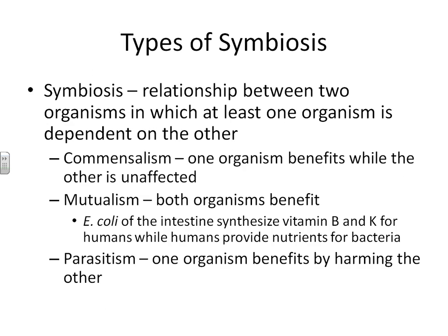Antagonistic relationships are not the only types of relationships we see between the host and microbes. There are three types of symbiotic relationships: commensal relationships, in which one organism benefits while the other is unaffected; mutualistic relationships, in which both organisms benefit; and parasitic relationships, in which one organism benefits while harming the other. There are not many good examples of commensal relationships with humans in microbiology, but there are many examples of mutualistic and parasitic relationships.